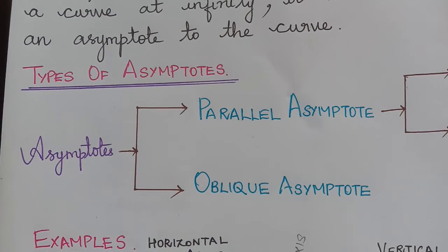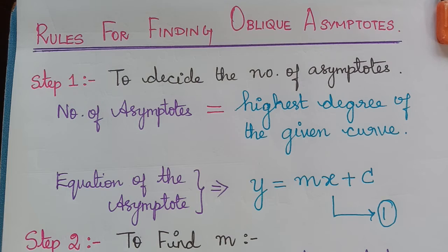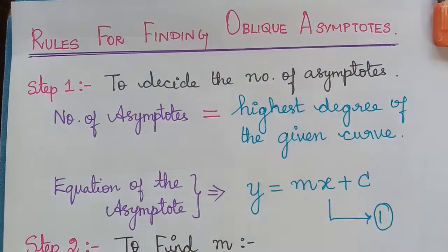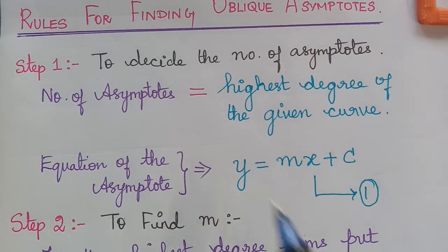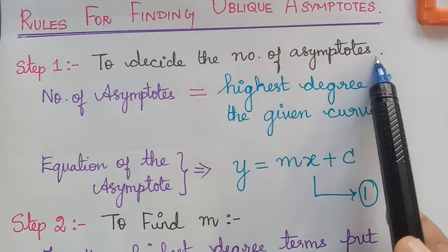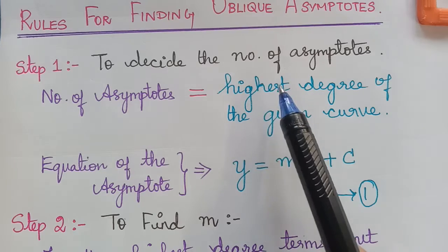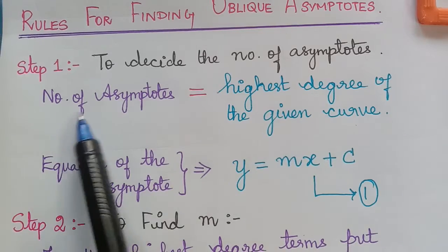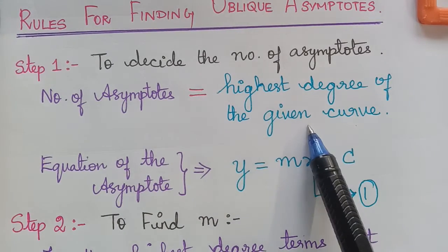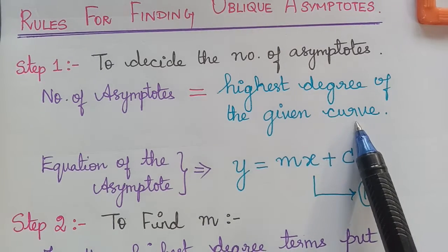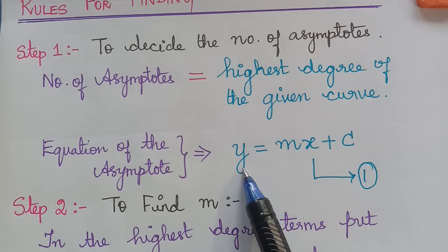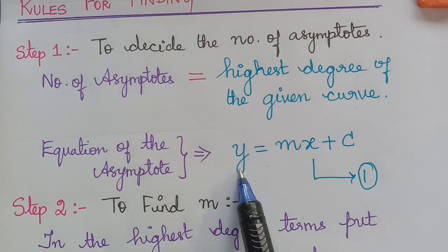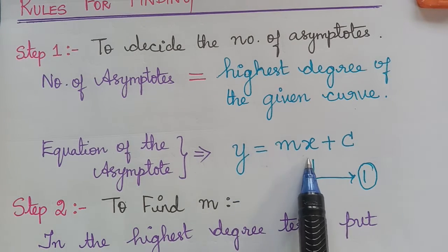We shall now learn some general rules to find oblique asymptotes. The first step is we have to decide the number of asymptotes to the curve — that is, we have to check what is the highest degree of the given curve, and that will be the number of asymptotes for that particular curve. The asymptote is a straight line, and the equation of a straight line is y = mx + c. Therefore, the equation of the asymptote in general is given as y = mx + c.